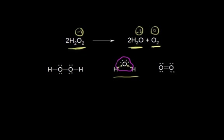Oxygen normally has 6 valence electrons, but here it's being surrounded by 8. So 6 minus 8 gives us negative 2. That is the same number that we figured out when we memorized it. Thinking about the electronegativity helps you understand oxidation states a little bit more.